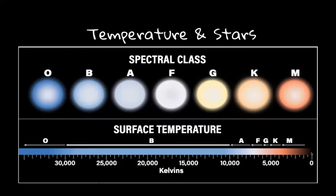Just like when you look at a campfire, we often think of red as the hottest. But when you look at a campfire, the hottest parts are actually blue. So for stars it's the opposite of what we label our sinks — red is cooler and blue is hotter.